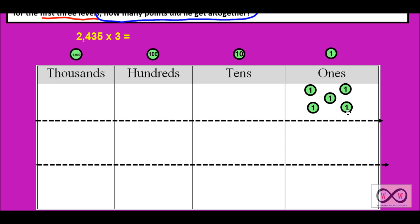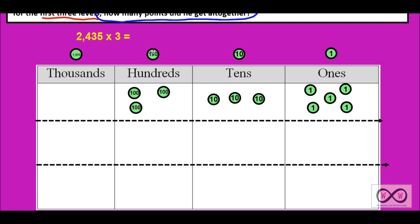All right, let's continue. Now we have three tens, so let's represent our three tens here: 10, 20, 30. Then we'll move on to the hundreds — we have four in the hundreds place, so we'll represent that with four hundreds: 100, 200, 300, 400. On to the thousands — we have two in the thousands place, so we will represent that with two place value discs: 1,000 and 2,000.